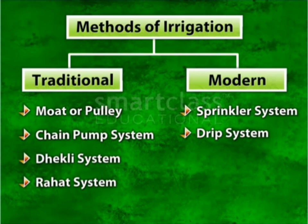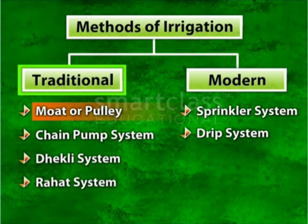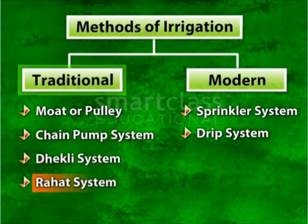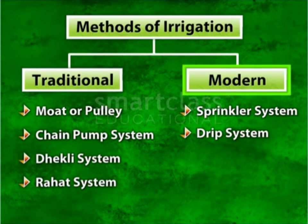Let us see the methods of irrigation. There are two major methods: one is the traditional method and another is the modern method. Motor pulley system, chain pump system, Dekli system, and Rahat system are the traditional methods used in our country, whereas the sprinkler system and drip irrigation system are the modern methods.